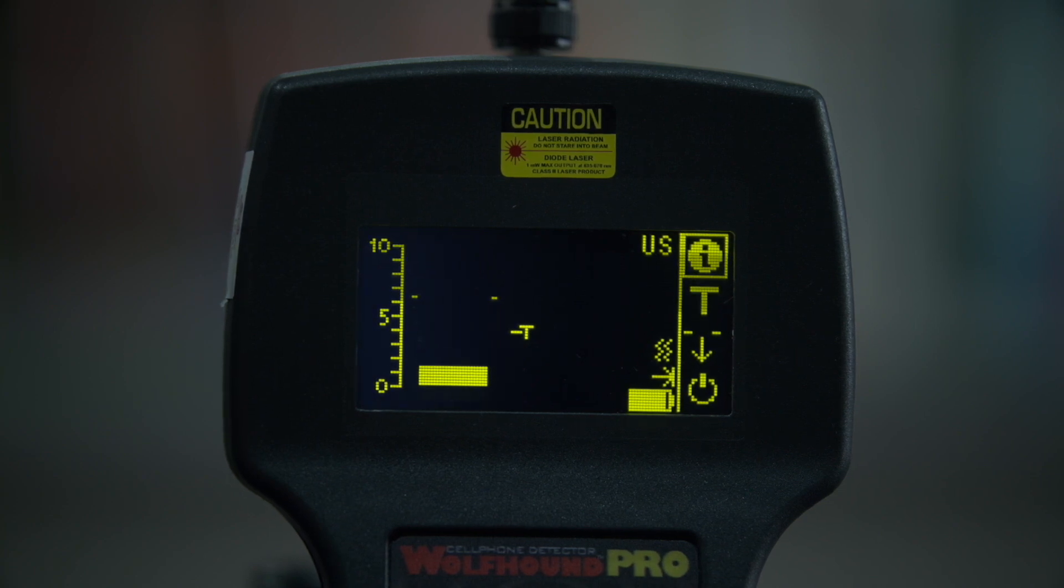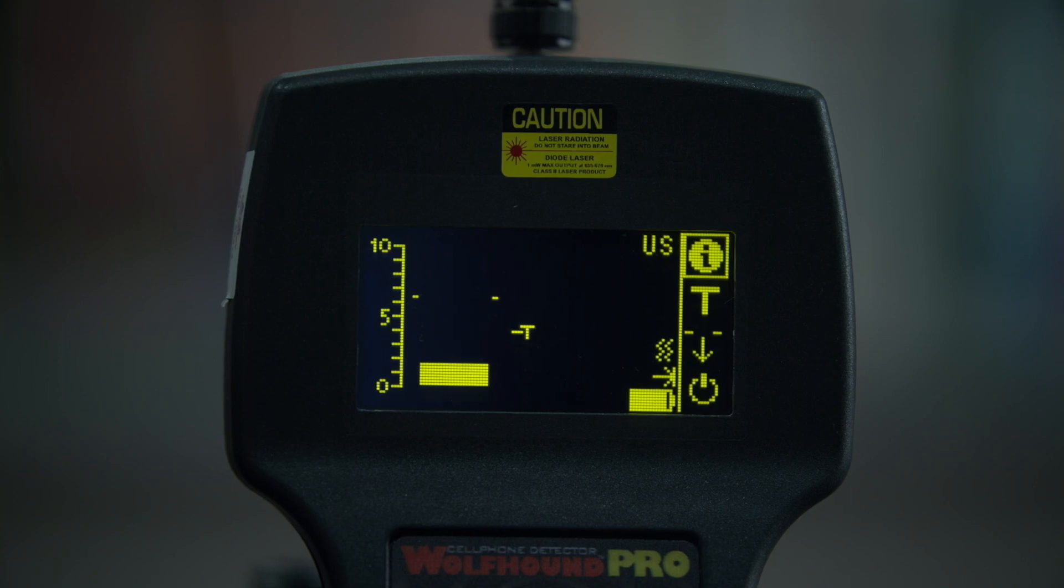The range of the Wolfhound Pro is about 75 feet. Walls and floors within the area of interest can affect the range of the Wolfhound Pro. With the Wolfhound Pro at the guard station, ask a colleague to go to points about 75 feet away and have them make a phone call or send a text message. Confirm that you can detect this activity with the Wolfhound Pro. Using this approach you can determine the actual area you can monitor with your Wolfhound Pro.